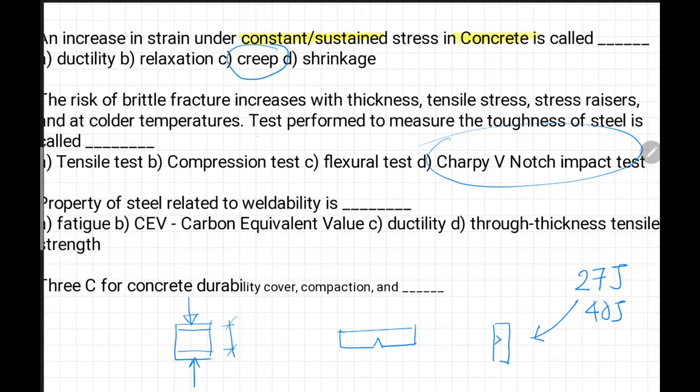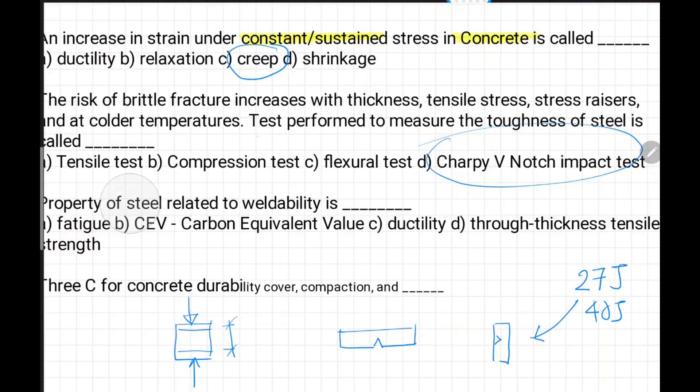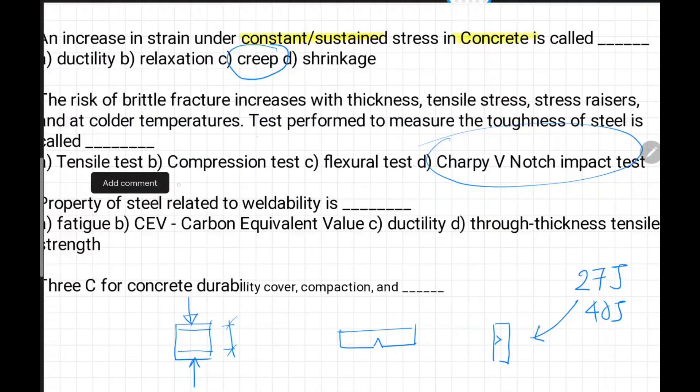Property of steel related to weldability - we have different mechanical properties. Here it is asked which property is linked to weldability. Is it fatigue, carbon equivalent value, ductility, through-thickness tensile test? When we talk about weldability, it comes to chemical composition. So the answer is CEV value.